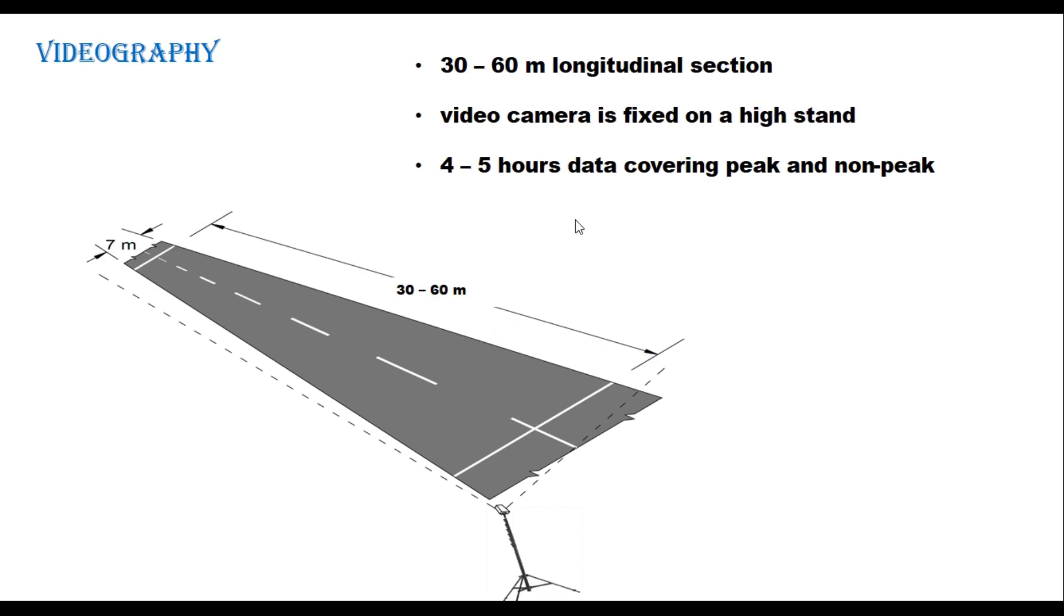The video camera is fixed on a high stand. This video camera and stand can be placed at the top of a building if it is available near the site. Otherwise you can have a high mast and put the video camera so that you can clearly cover this trap of 30 to 60 meter.